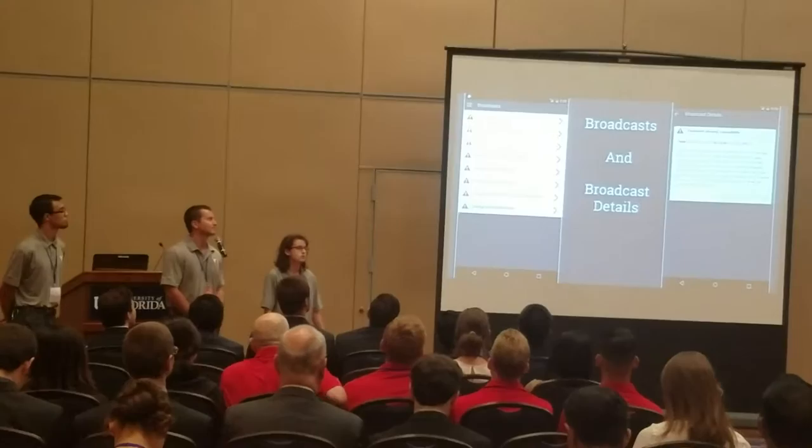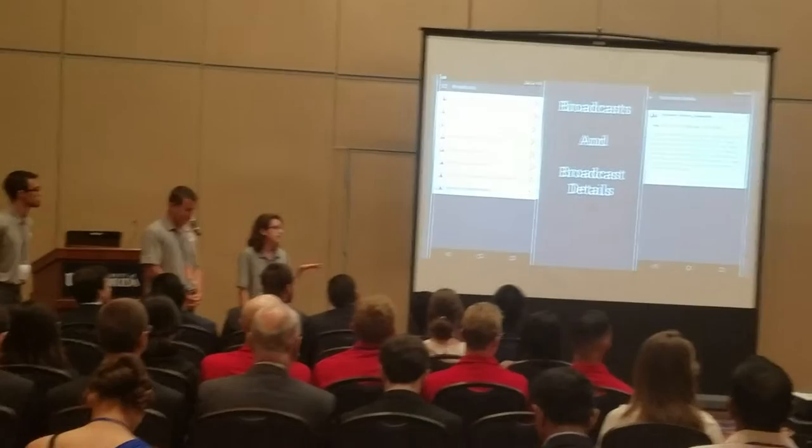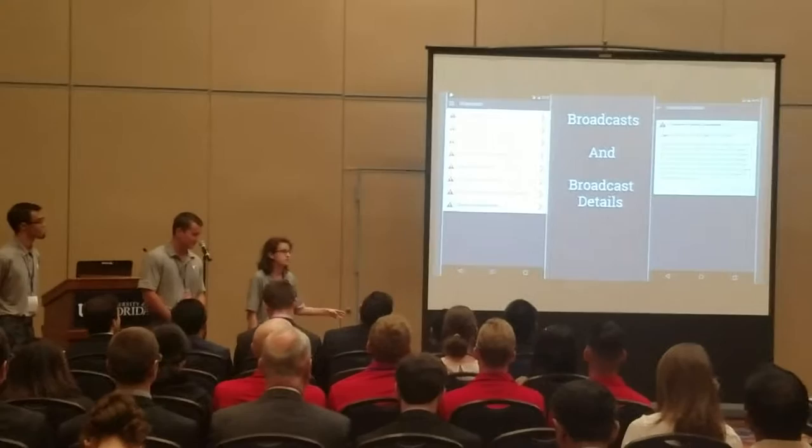The broadcast page is what users are first brought to when they log into our system. This page is where they view what broadcasts they have received from the system so far, organized by color into the three alert types: red is for vulnerabilities, yellow is for updates, and green is for general announcements.